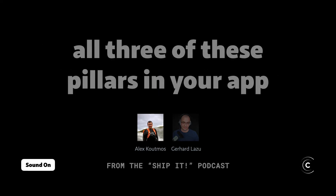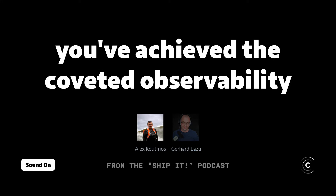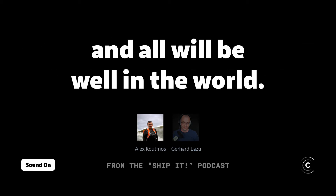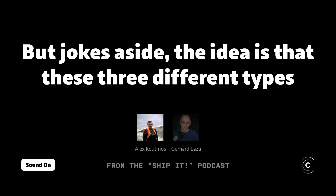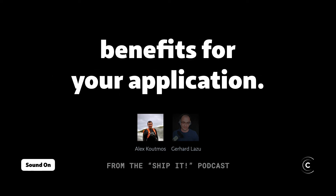It's theorized that if you have all three of these pillars in your app, you've achieved the coveted observability and all your SREs and your DevOps people in your organization will come and shake your hand and all will be well in the world. But jokes aside, the idea is that these three different types of observability tools yield different benefits for your application.